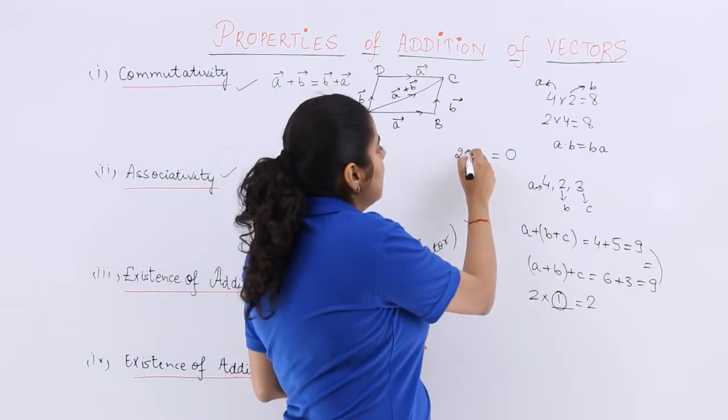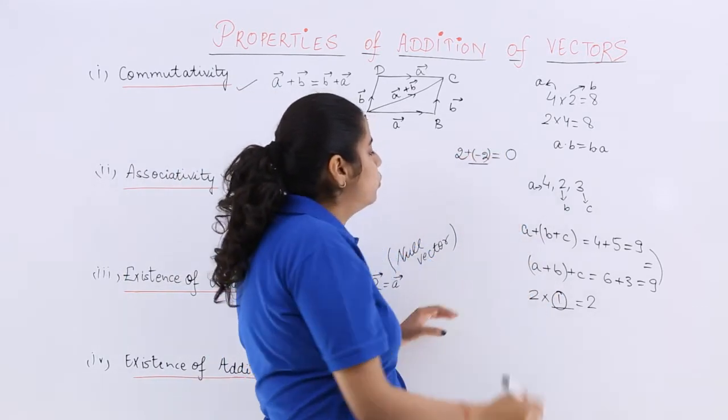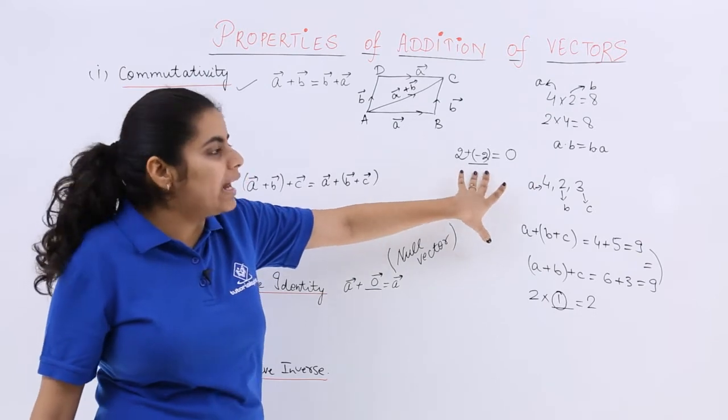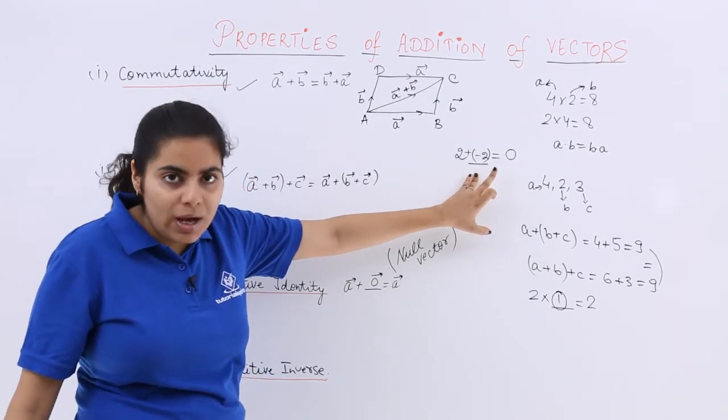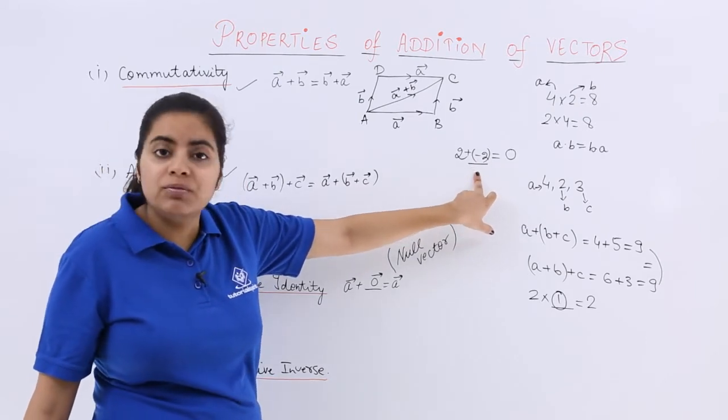Suppose I have 2 and now I need the result as 0. So what should be added to it? So to add minus 2 will give me only 0. So 2 when added to minus 2 gives me 0. That is the identity. So I know that minus 2 is the additive inverse.